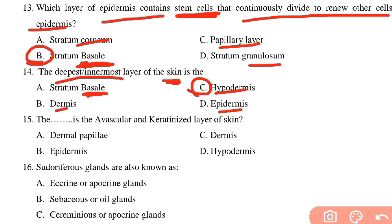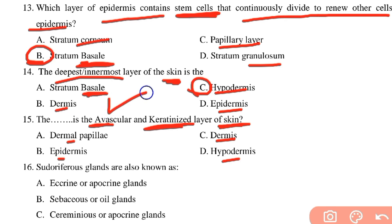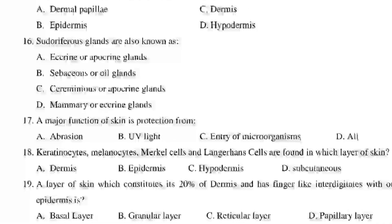The epidermis is avascular — it has no blood supply — and is a keratinized layer of skin. The superficial layer of the skin is the epidermis, and it is the outermost layer.